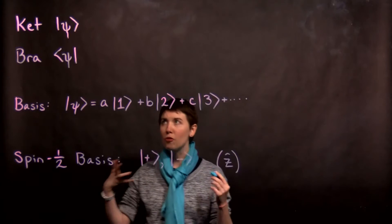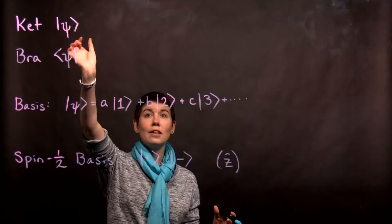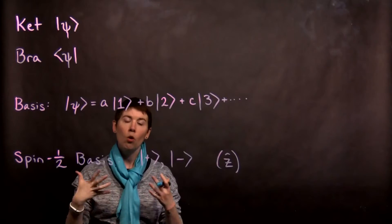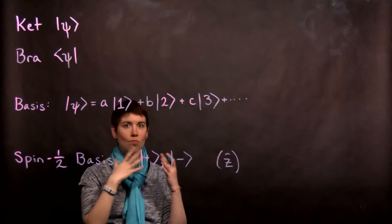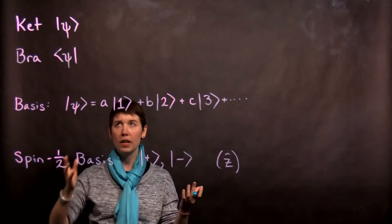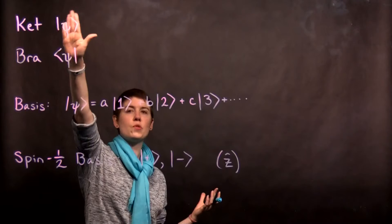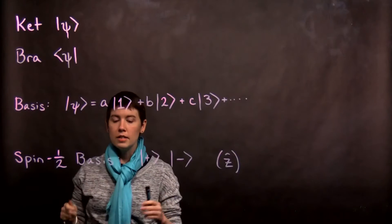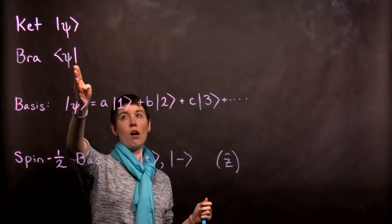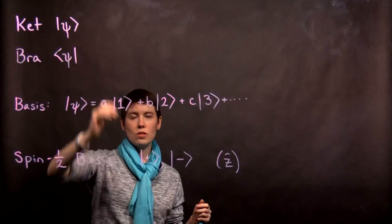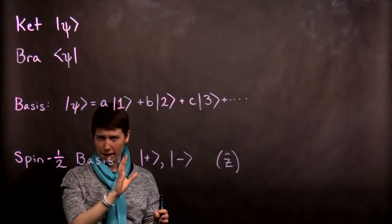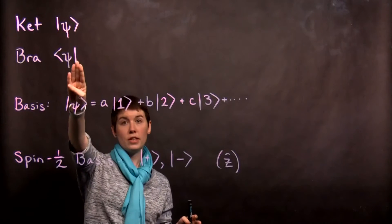So the first thing that we are going to be working with are what's called ket states. A ket is going to represent one of our quantum states. And eventually this will get complicated, but right now we're just going to write it this way. This is some quantum state. Now something that I will introduce now is the idea of a bra state. And together this forms a bra-ket or a bracket. And we're not there yet, but first I just want you to know that it's here.